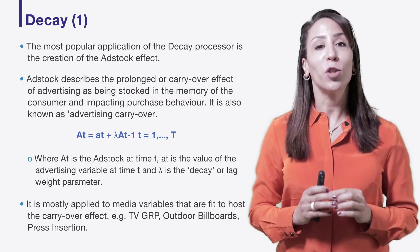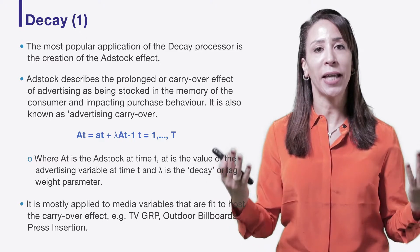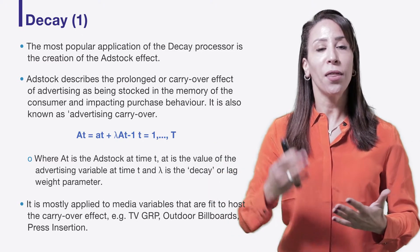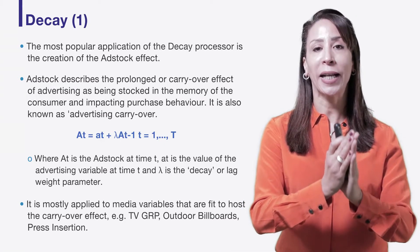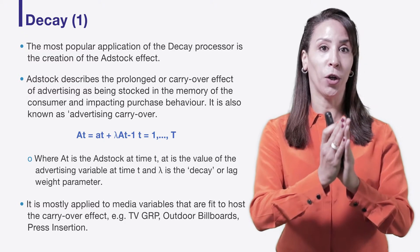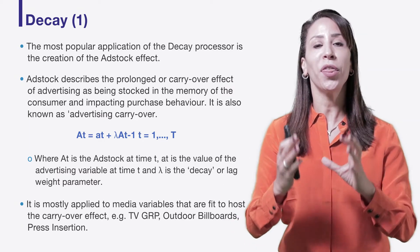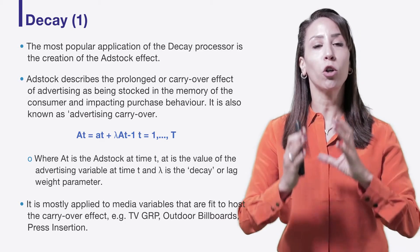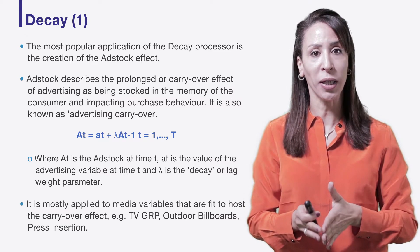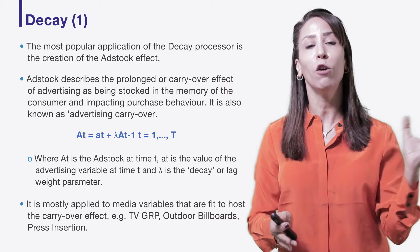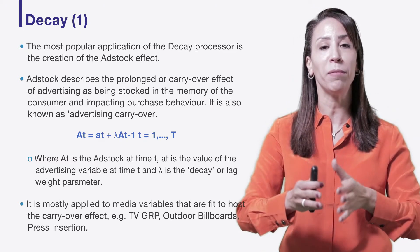One of the most popular transformations in marketing mix modeling is the decay transformation, commonly called adstock. The theory behind adstock is that there is a prolonged or carry-over effect of your advertising activity. When you advertise at time t, that activity won't only impact consumption at time t, but will carry over to subsequent weeks. Mathematically, we think of it as a stock of advertising — my stock today is influenced by how much advertising I'm receiving that week, plus a carry-over effect from the stock of advertising from previous weeks. The decay determines how much memory is carried forward week on week.